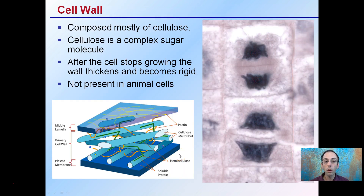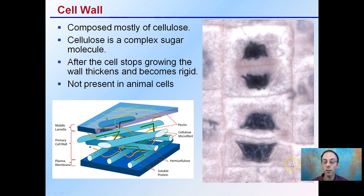The cell wall is only present in plant cells — so the cell membrane is in plant and animal cells, but the cell wall is only in plant cells. We see here onion cells and root tips in particular. Cell walls are composed mainly of cellulose, a complex sugar molecule that provides strength and rigidity. After the cell stops growing, the wall thickens and becomes rigid, which gives plant cells their almost box-like appearance at maturation.